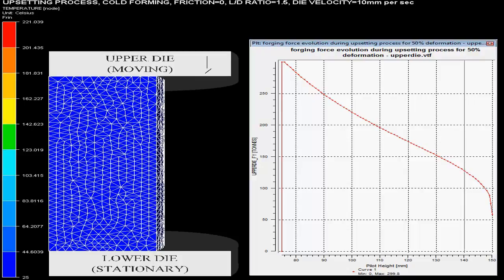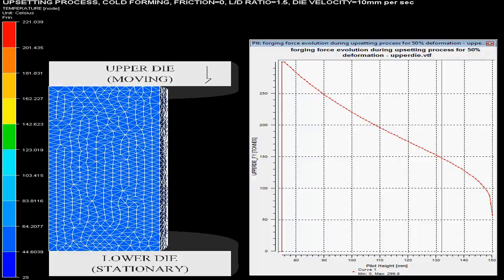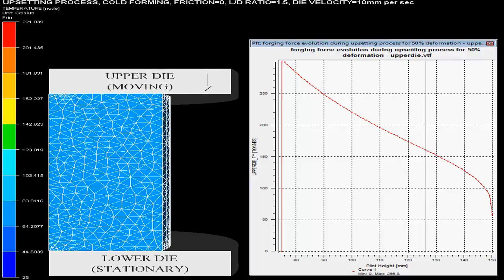The length by diameter, or L/D ratio, of the billet is 1.5, and the friction coefficient in the upsetting process is 0.